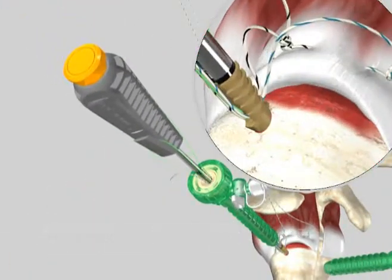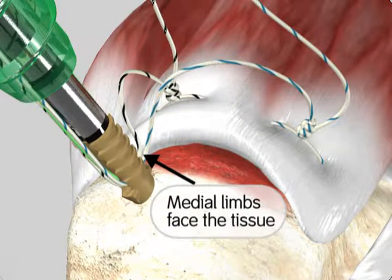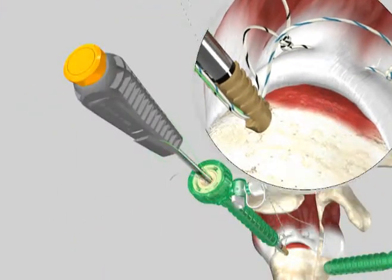Orient the anchor such that the medial limbs entering the anchor face the tissue so the suture does not twist around the anchor.